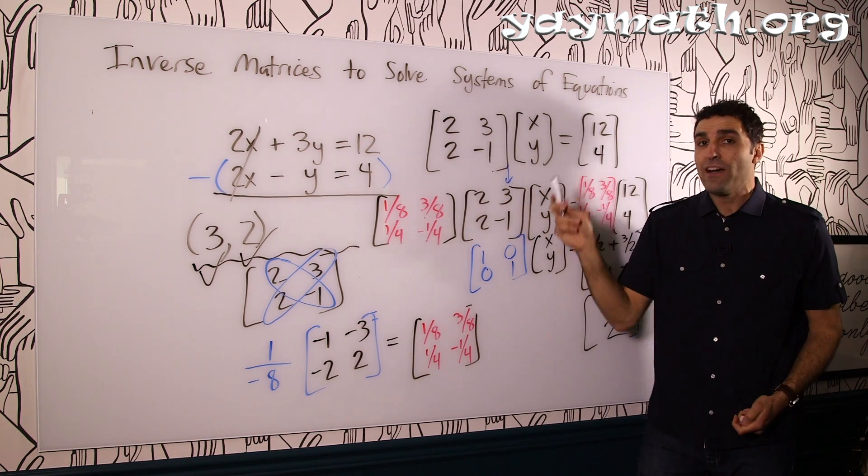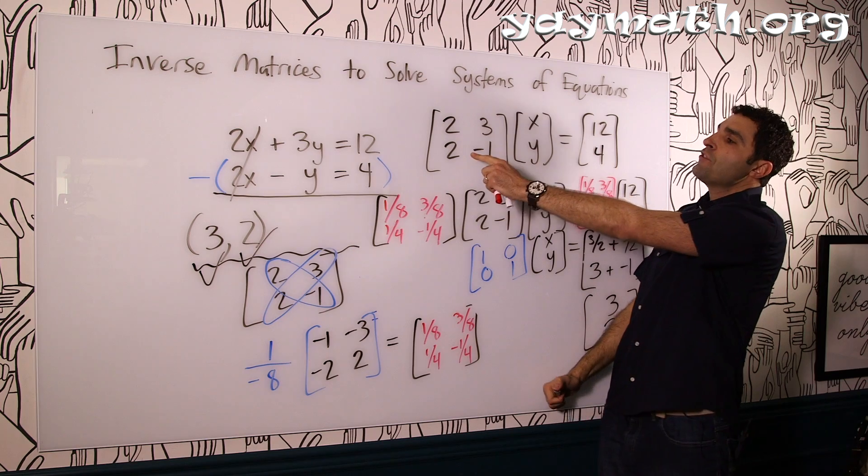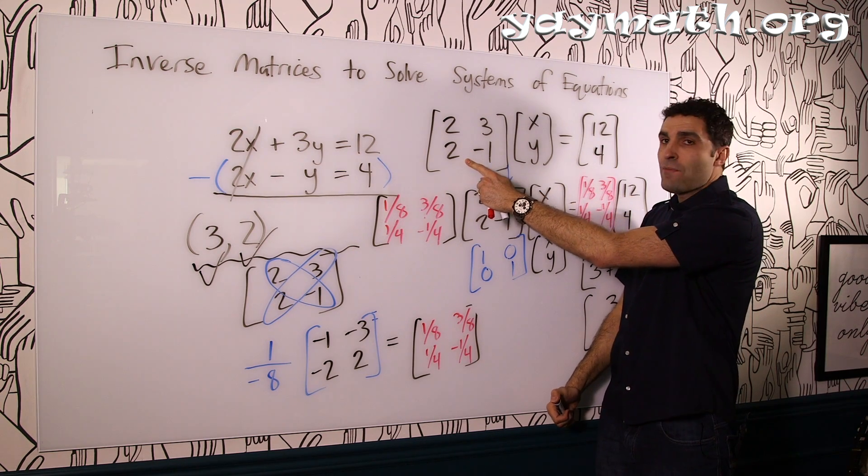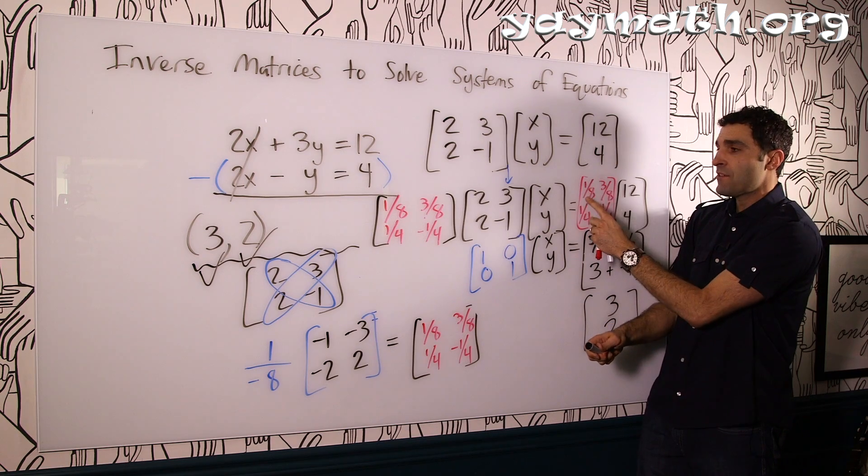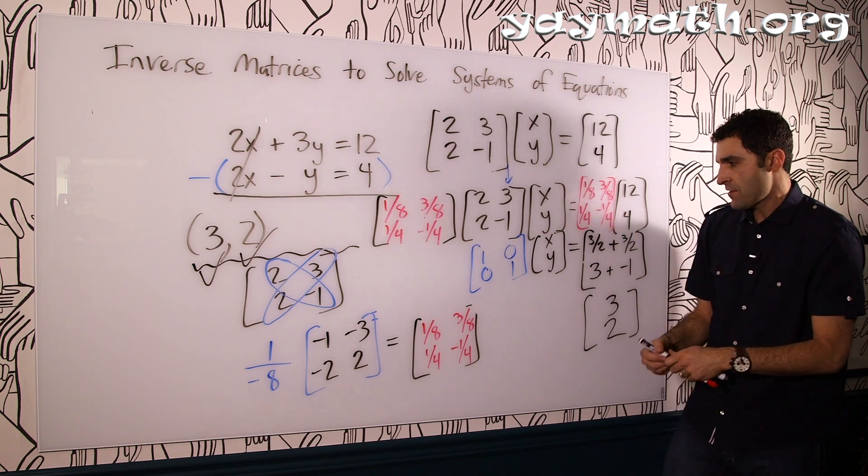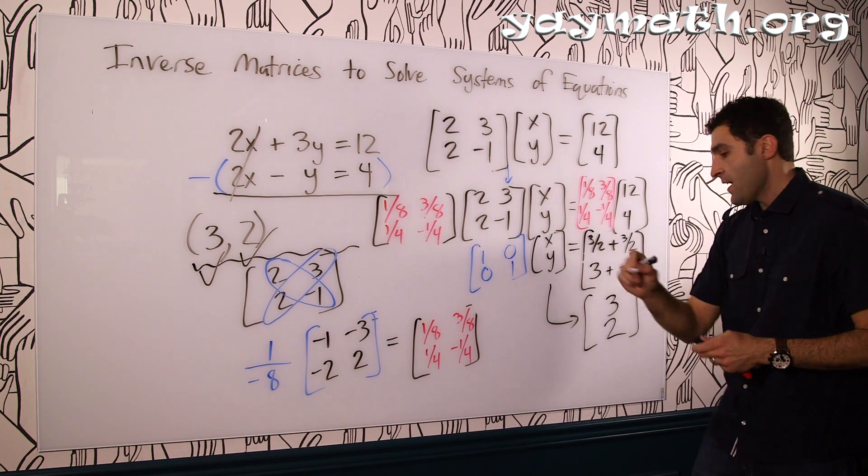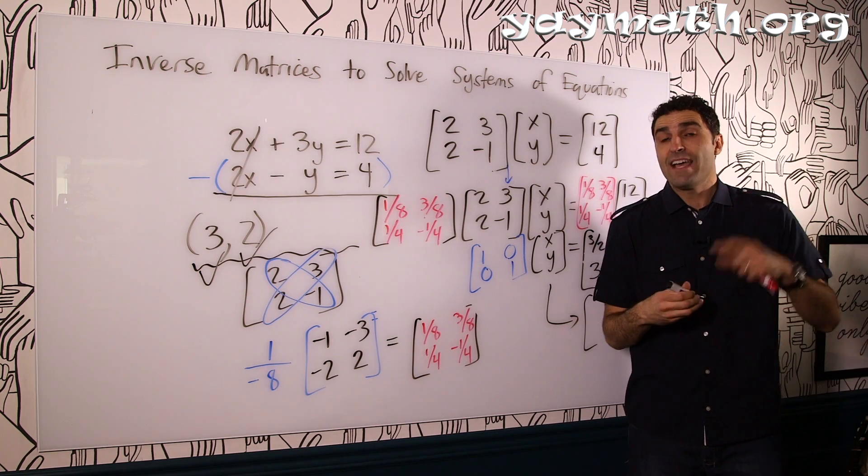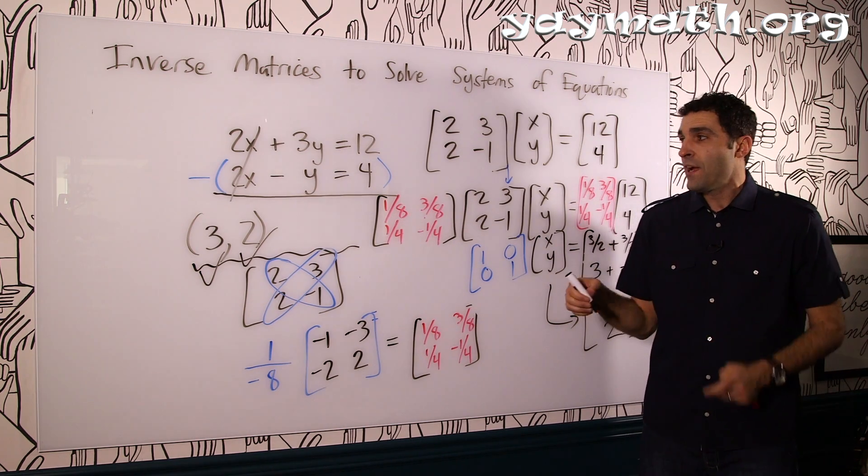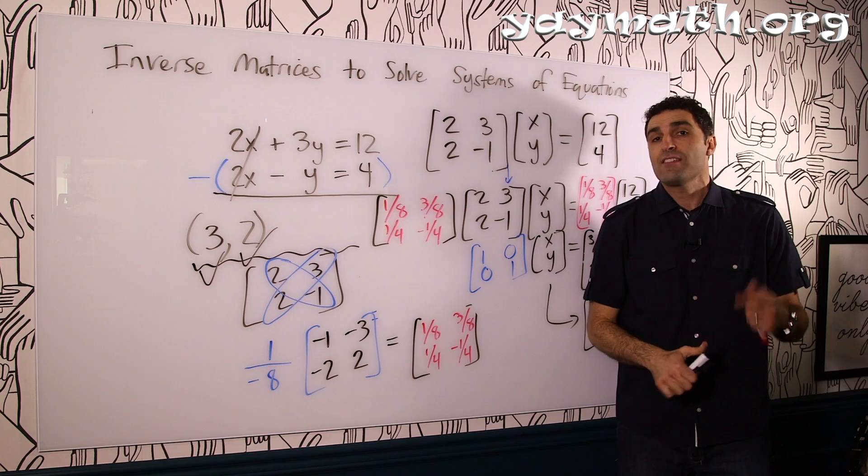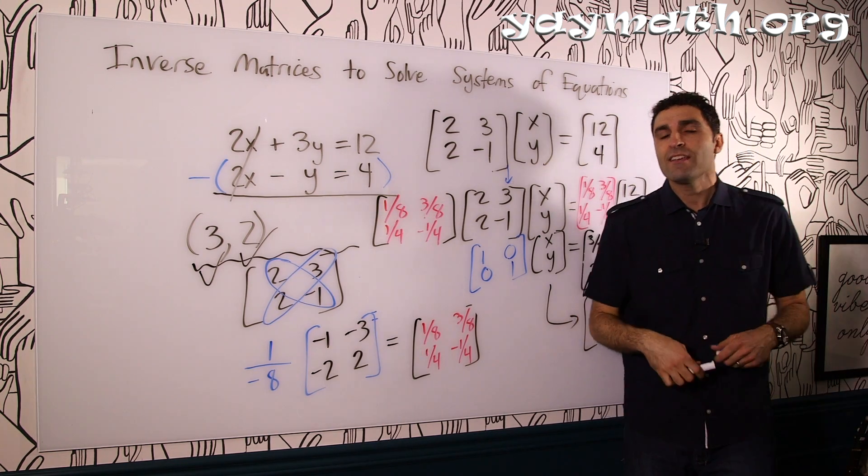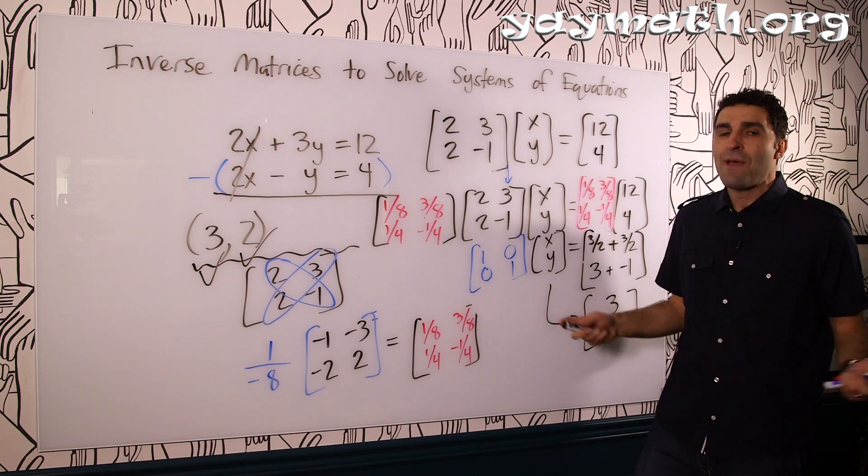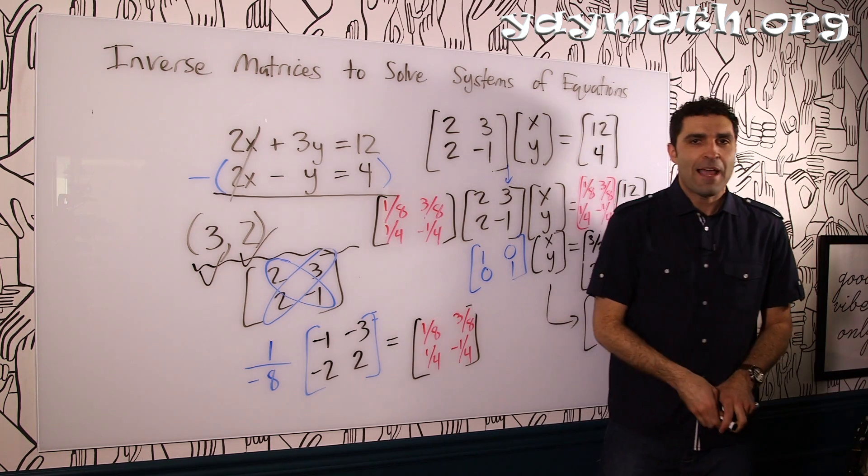So it works every time. What's really special about this is that you could also use the calculator to calculate your inverse of this 2 by 2, and then all you need to do is multiply this matrix by the inverse and you'll get your solutions. So x and y equal 3 and 2 respectively. At the end of this video, I'm actually going to show you a brief way to get the inverse on this and use it to solve this system. Thank you so much for watching. This is Robert from yaymath.org and Yay Math in Studio, and we'll see you next time. Later!